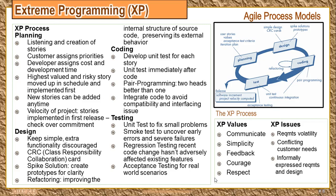Next we move to XP values. First, you need to communicate efficiently — there should be communication between stakeholders and engineers to get functionalities, all done in an informal way. Next is simplicity: there should be an immediate design; you have to code for the current requirement, not for future needs. You just have to focus on current developments because you are supposed to deliver the software in a short period of time.